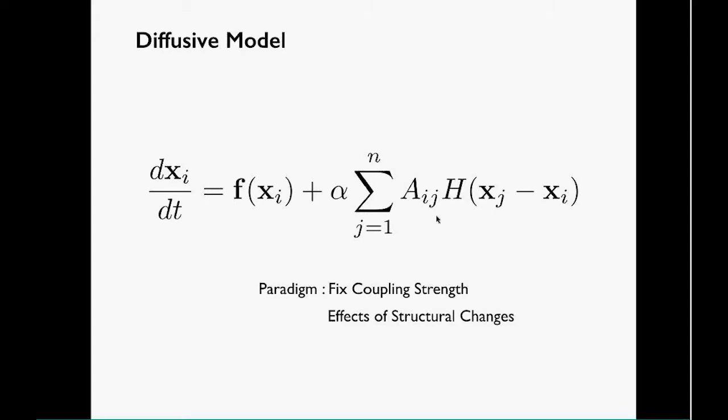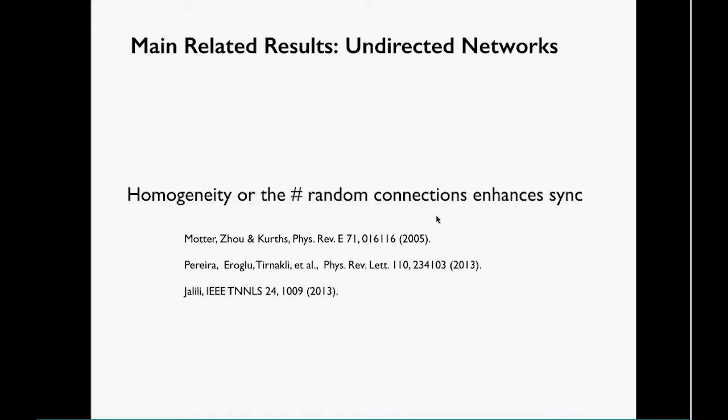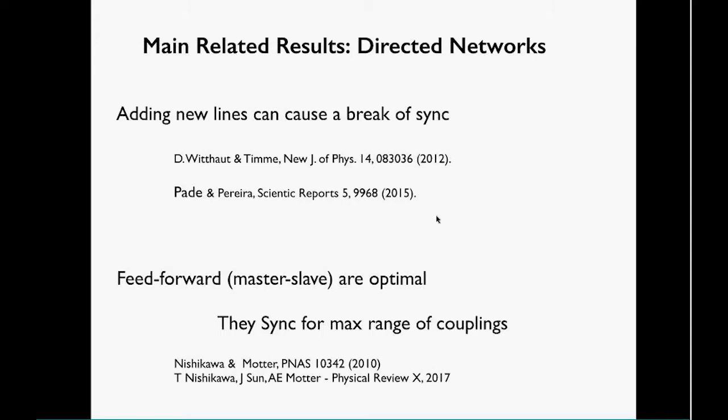For example, for undirected networks when this matrix A_ij is symmetric, people know that if you increase the homogeneity of degrees you favor synchronization. In particular, introducing random links usually will favor synchronization.